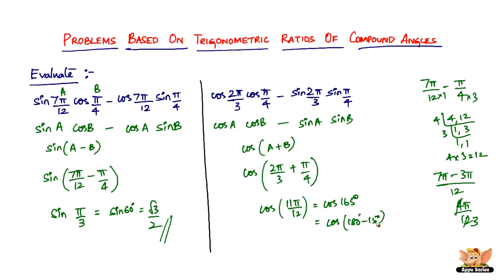So 165 lies in which quadrant? It lies in the second quadrant. Second quadrant cosine is negative, it's going to be minus cos.